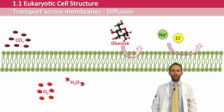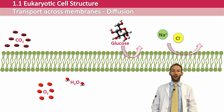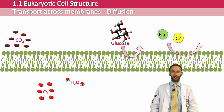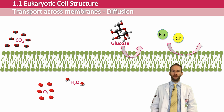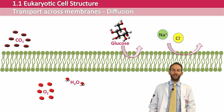Diffusion is just the movement of molecules from an area of high concentration to one of low concentration. It's a passive process — it doesn't require any energy. It just relies on the fact that molecules can move around randomly, and therefore over a period of time they tend to spread out from where there are lots of them to where there aren't very many.